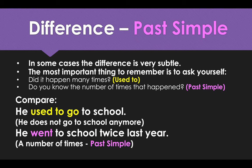There is a lot of confusion between the past simple. I will try to explain as best as I can. In some cases, the difference is very subtle — so very minimal. The most important thing to remember is to ask yourself: did it happen many times? Then use 'used to'. Do you know the number of times it happened? Then use past simple.